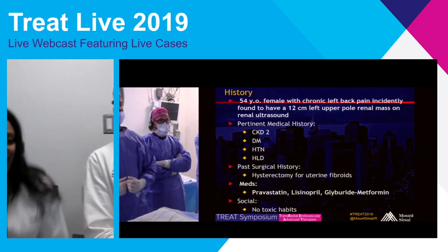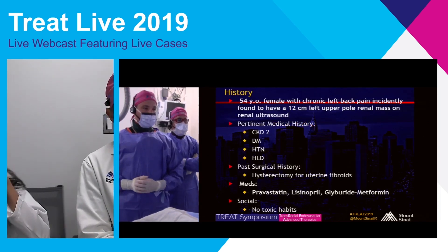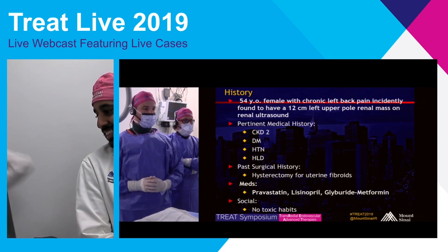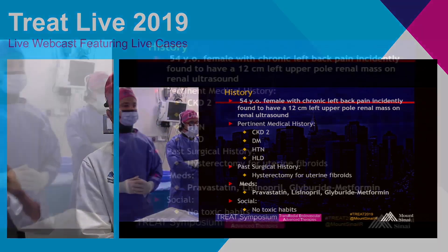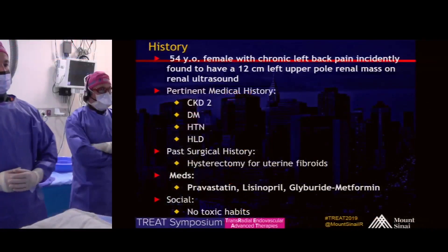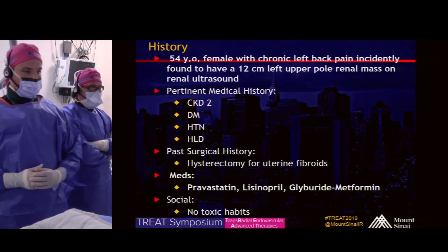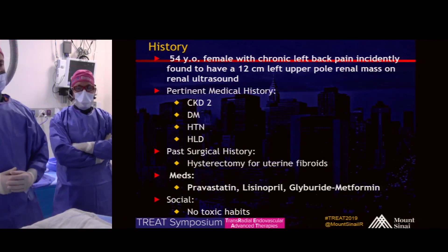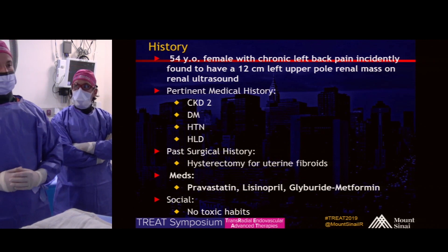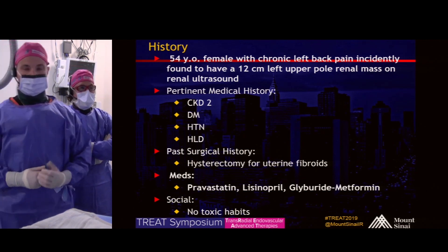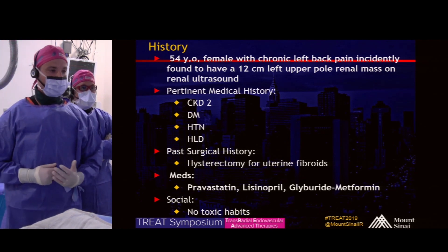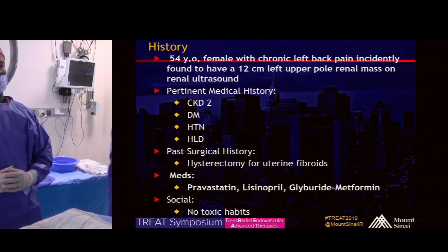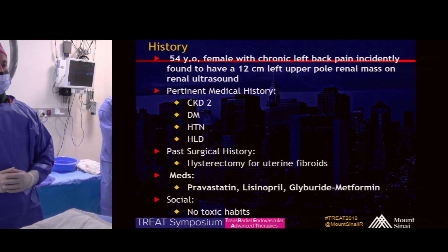Our patient is a 54-year-old female with a history of chronic left back pain, and she was incidentally found to have a 12-centimeter upper pole renal mass on a renal ultrasound performed for her history of CKD. She also has a history of diabetes, hypertension, and hyperlipidemia. Previously, she had a hysterectomy for uterine fibroids.